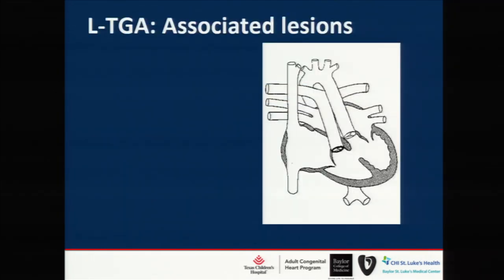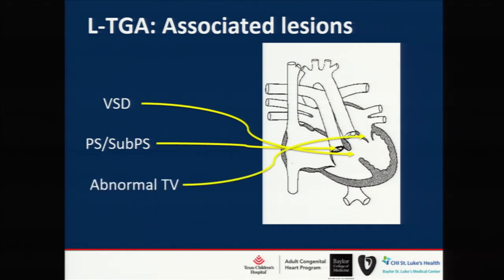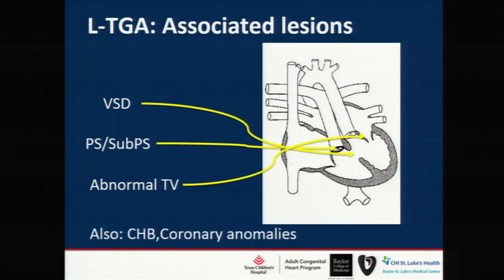A couple of associated lesions with LTGA: you have an abnormal tricuspid valve, a VSD often associated with it, pulmonic or sub-pulmonic stenosis, coronary anomalies, and AV block. So all these patients certainly deserve an EKG.